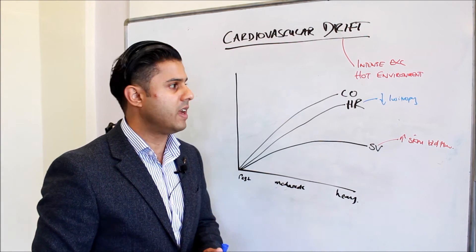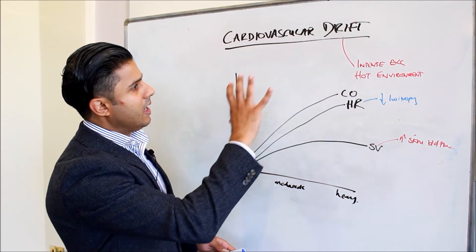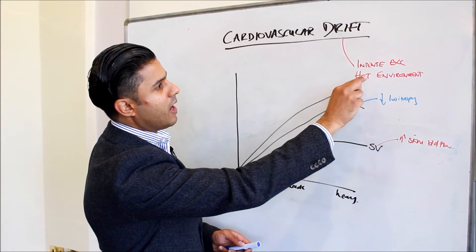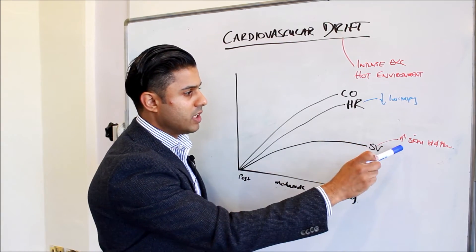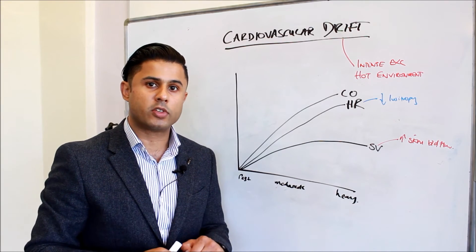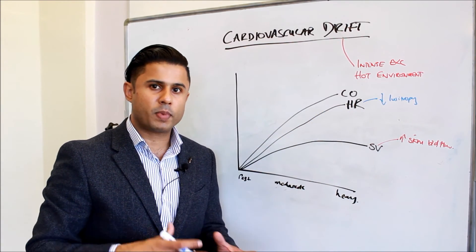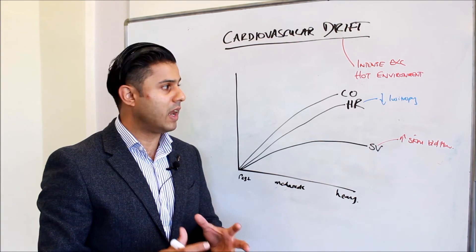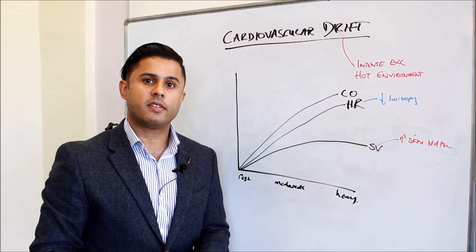Cardiovascular drift is a combination of exercising very intensely in a hot environment, increased skin blood flow which causes a drop in stroke volume, compensatory increase in heart rate which will potentially reduce lusitropy or relaxation. But the most important thing is that cardiac output is maintained.